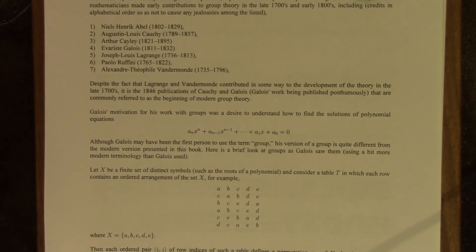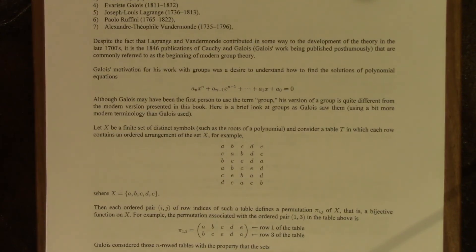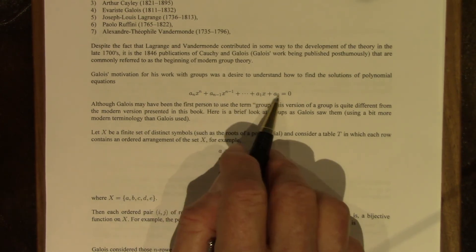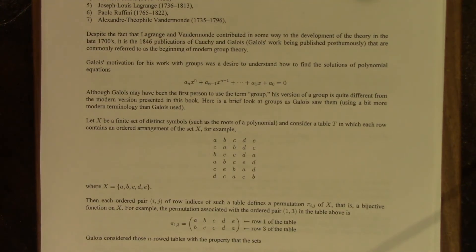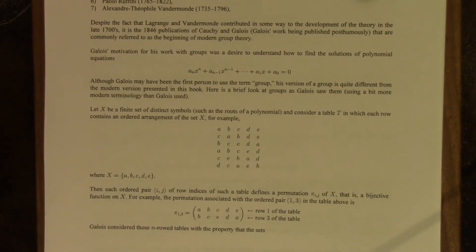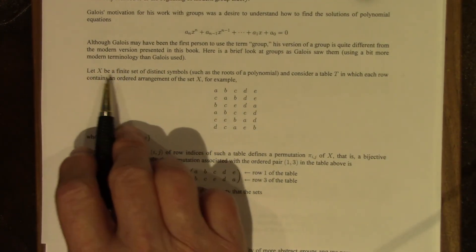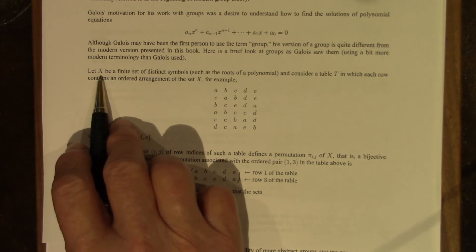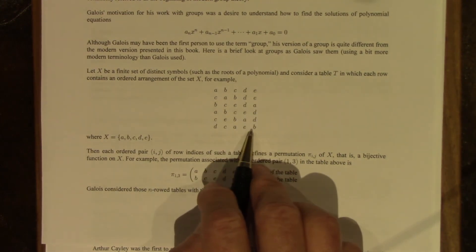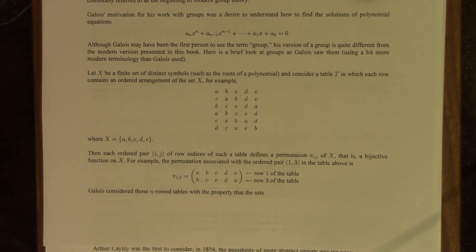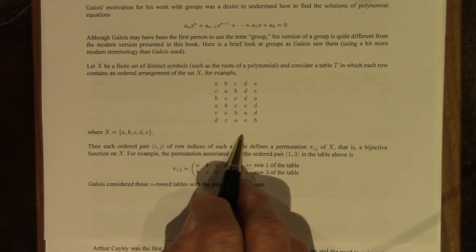So in the first half of the 1800s, let's say, Galois' motivation for his work with groups was the desire to understand how to find solutions of polynomial equations. He may have been the first person to use the term group, but his version of a group is quite different from the modern version that we're studying now. So here is what Galois did. Here is Galois' view of groups. We start with a finite set of distinct symbols, call it X, and consider tables in which each row contains an ordered arrangement of the elements of X. So in this case, X is A, B, C, D, E, and these are ordered arrangements of those letters.